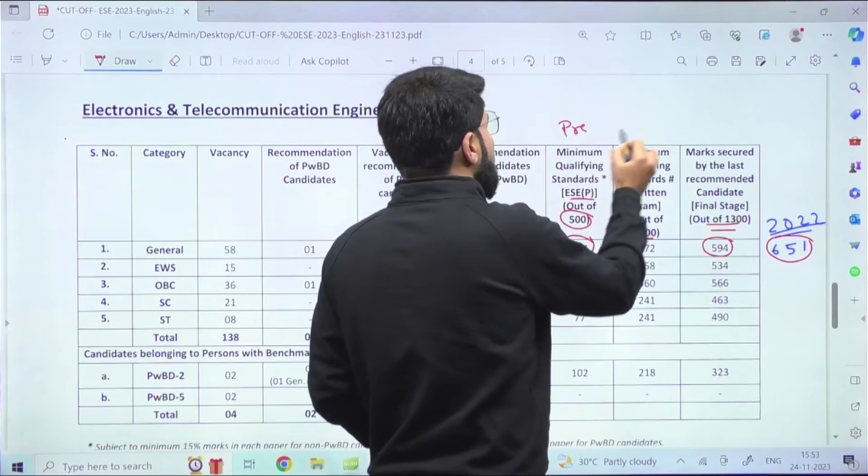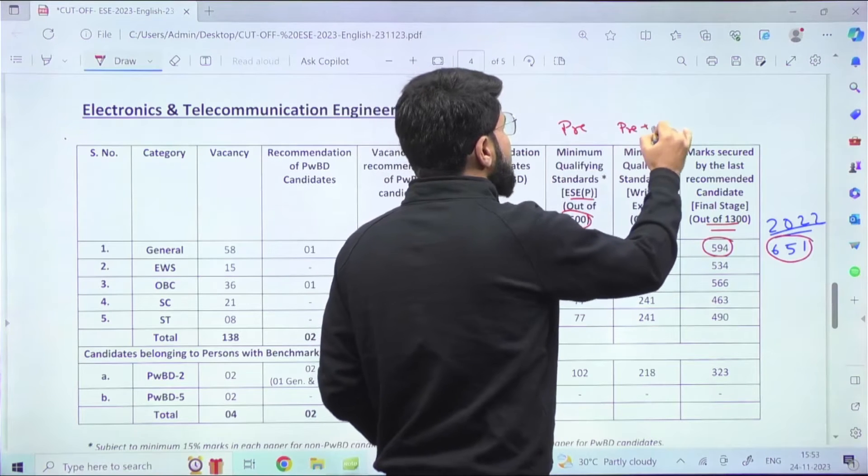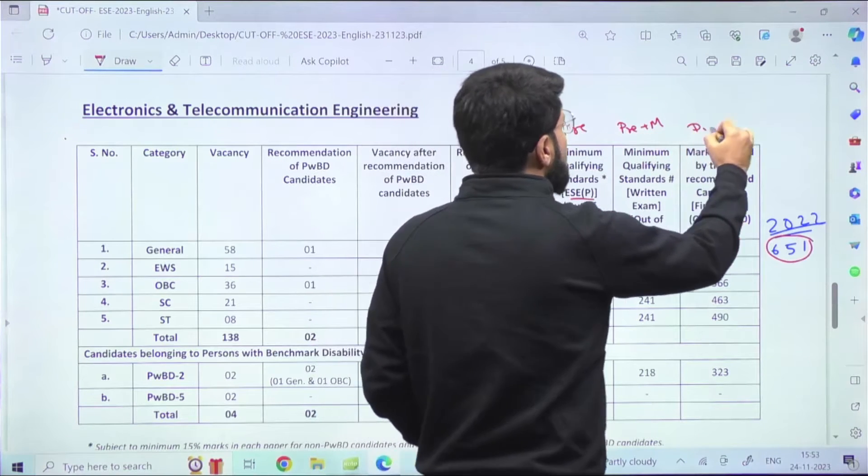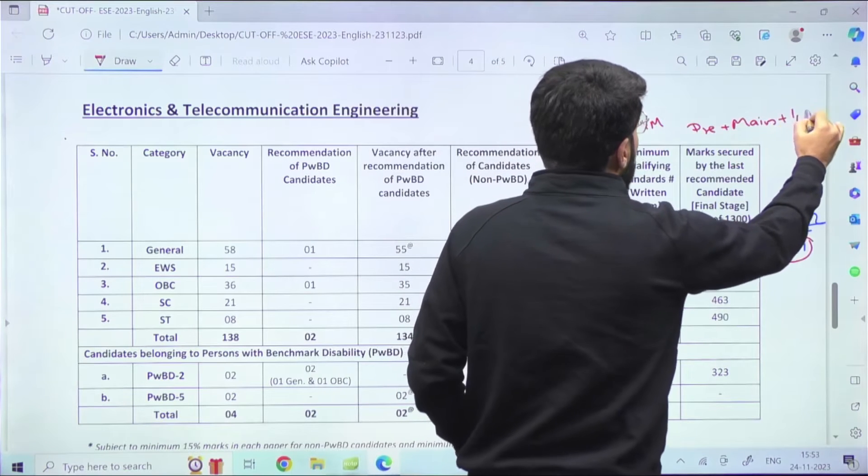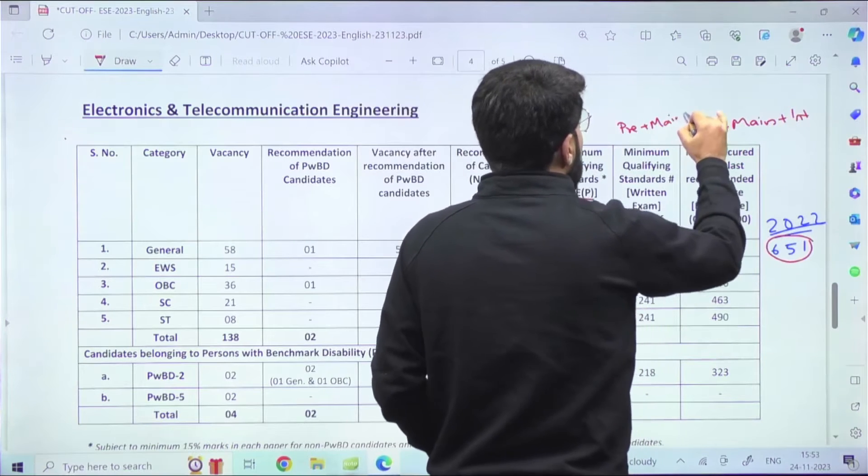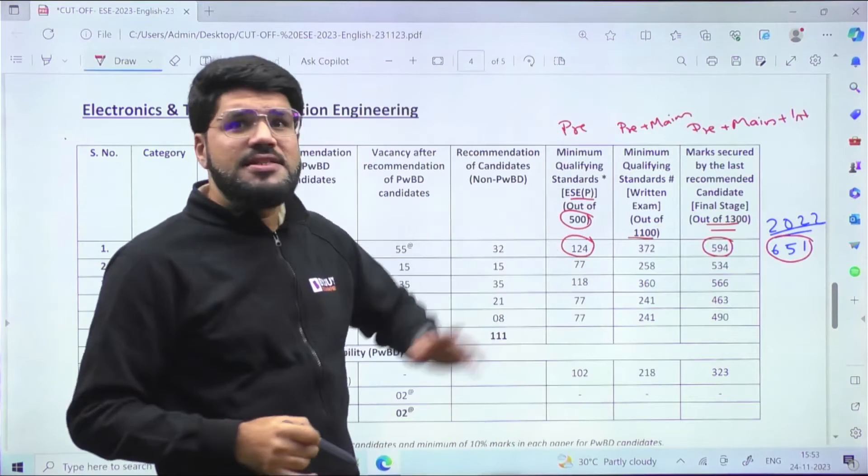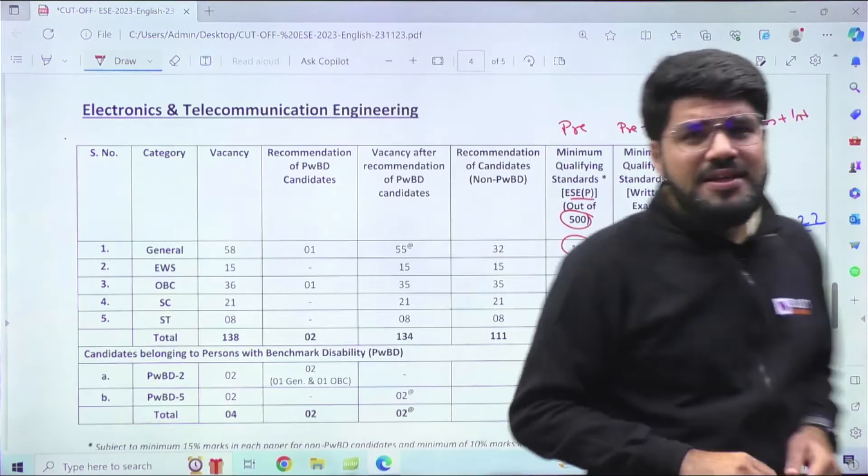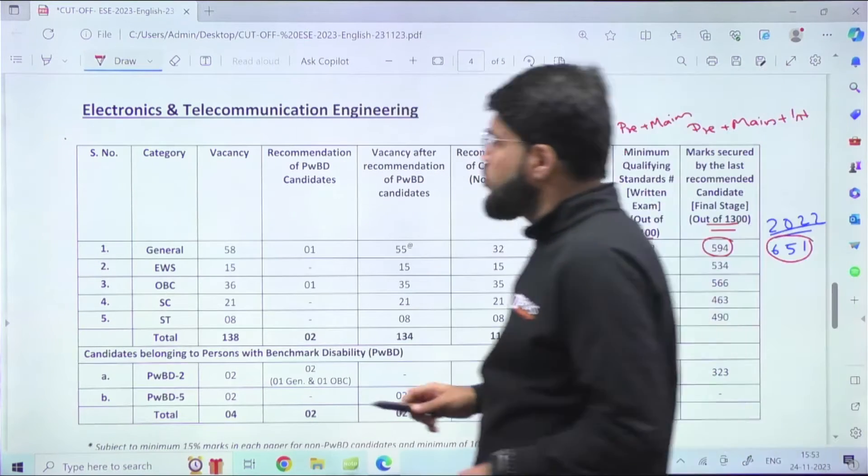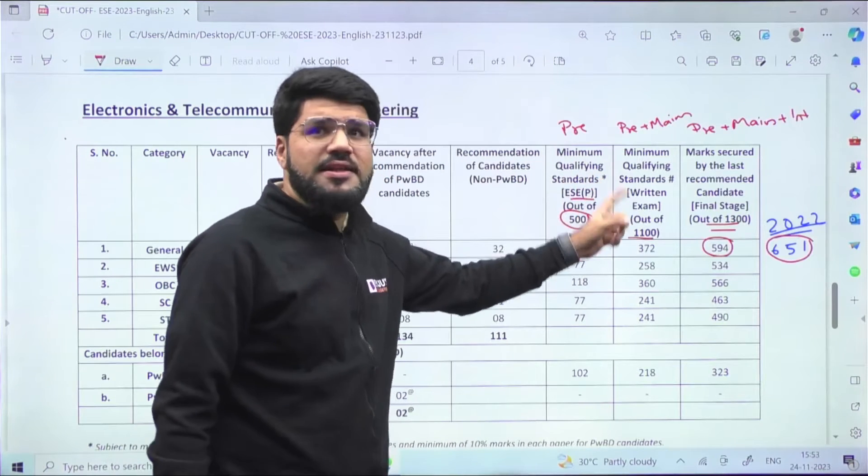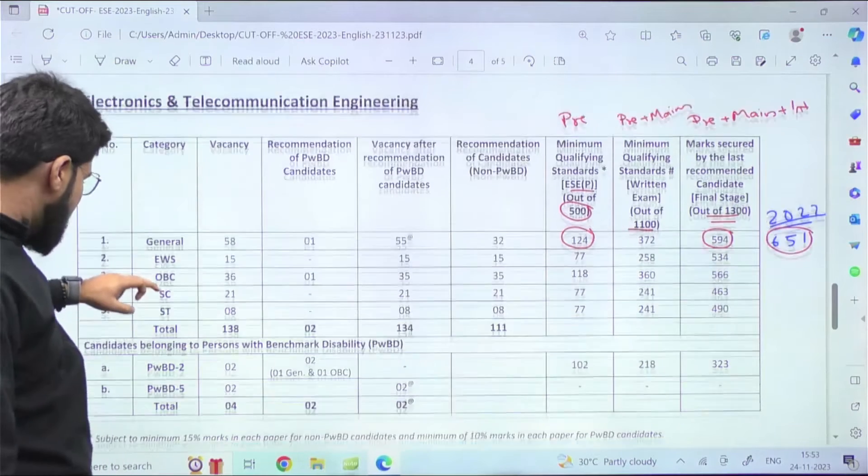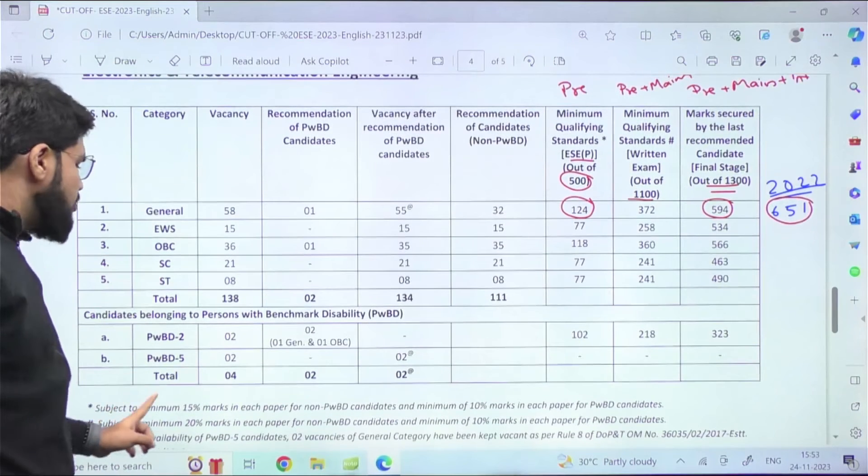The cutoff out of 1100 is 372. This 1100 includes prelims plus mains, and the final includes prelims plus mains plus interview. Accordingly, all three stage cutoffs are mentioned. There are also some hidden parameters - with the prelims result there's a star mark.